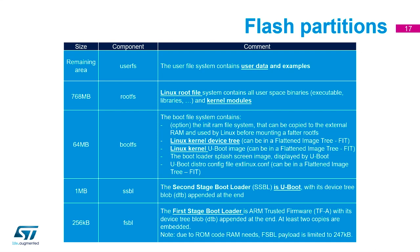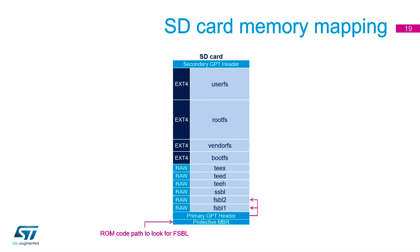The user filesystem takes up whatever DDR memory you've assigned on the device. Looking at the SD card partitions, you can see: FSBL bootloader one and two (two versions to avoid corruption), the second stage bootloader, OTP partitions, the boot filesystem in ext4 format, a vendor filesystem for licensing such as GPLv3 content, and finally the root filesystem and user filesystem partitions.